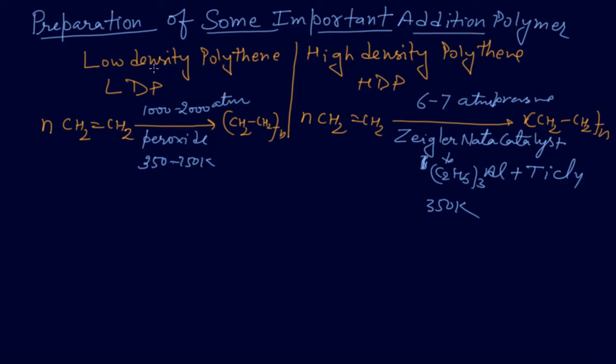Now, low density polyethylene and high density polyethylene. See guys, how the question will come - low density polyethylene means density is less, high density polyethylene means that density is greater. So what is the main difference? When we are making low density polyethylene there is 1000 to 2000 atm pressure, whereas in high density polyethylene there is six to seven atmospheric pressure.